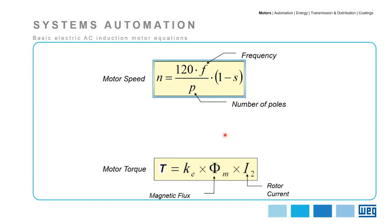Now, having the understanding that the VFD can change the frequency, let's take a look at some AC induction motor equations. The motor speed is defined by: 120 multiplied by frequency, divided by number of poles, multiplied by one minus slip. Keep in mind that the number of poles and slip are motor characteristics. Therefore, in order to change the motor speed, it's required to change the frequency — and this is exactly what the VFD does.